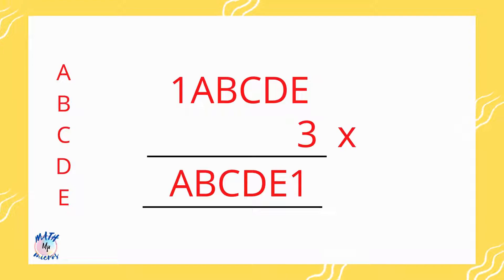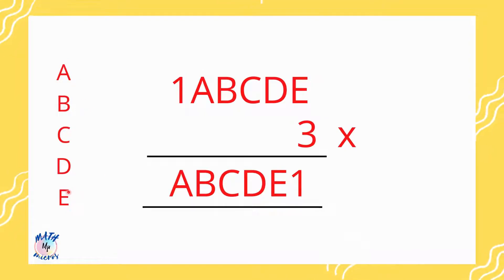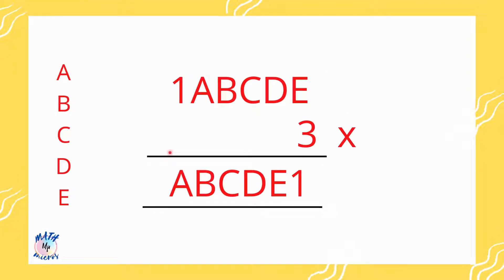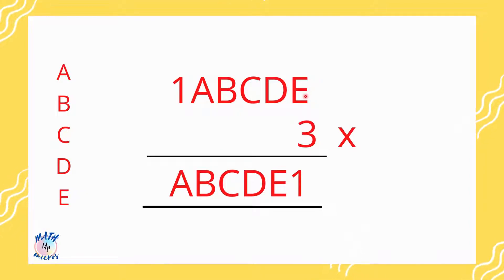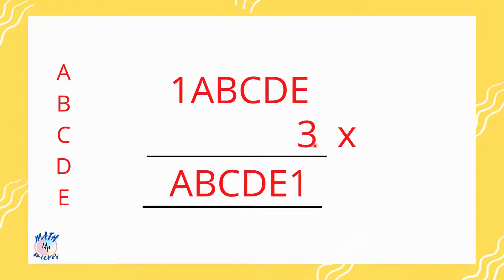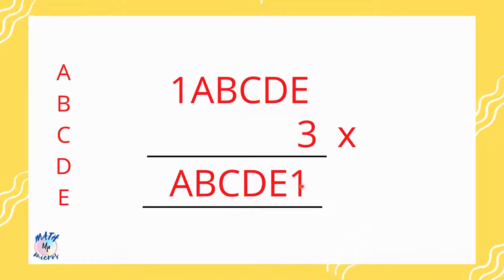We need to find the letters a, b, c, d, and e. We always start the multiplication from right to left, so we start with the units digit which is e. e multiplied by 3 gives a number that ends in 1. When you look at the 3 times table, you can say that it is 7, since 7 times 3 is 21.